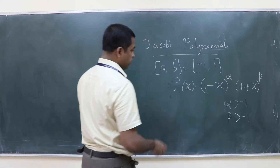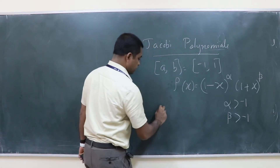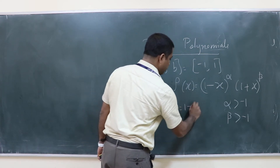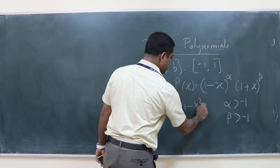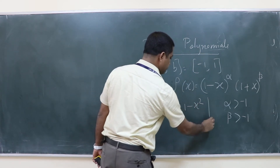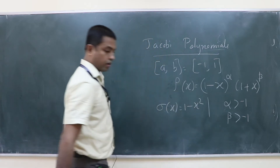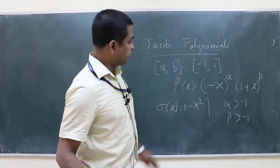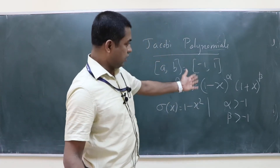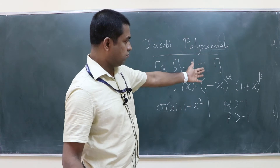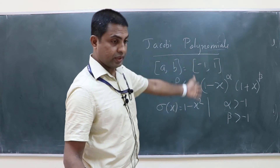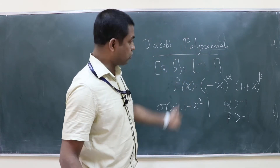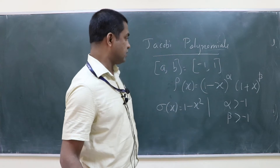Here σ(x) is equal to 1 minus x squared. You can see there are two parameters in this case, whereas in the earlier cases there was only one parameter.